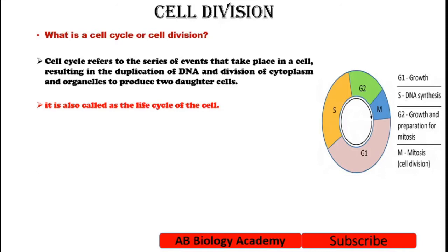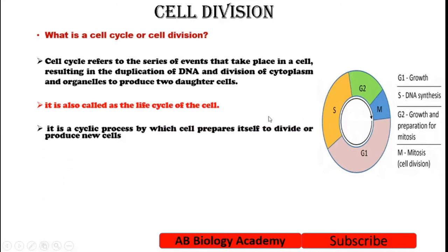As you can see, one cycle is going on. One stage comes and then the other stage comes and then it comes back to that stage — the phase cycle starts again. That's why it's called a cell cycle. It's a cyclic process by which the cell prepares itself to divide or produce new cells.